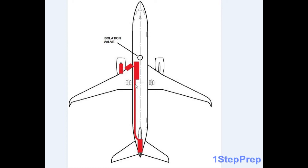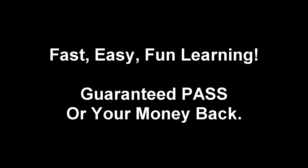The keel beam, which is what brings our APU air back from our APU all the way up to our air conditioning bay, and the APU duct, which is the ducting immediately coming off the APU bringing the air into the keel beam. Those are the five areas monitored by the left side. The right side monitors the right air conditioning bay and the right leading edge of the wing.